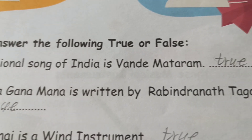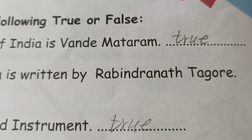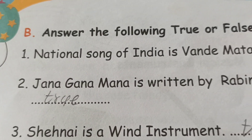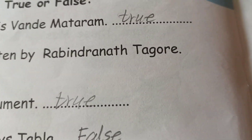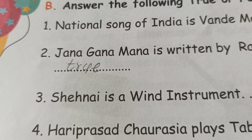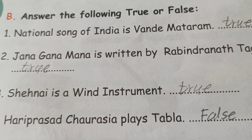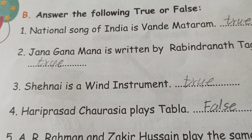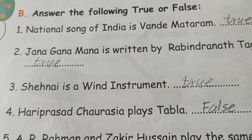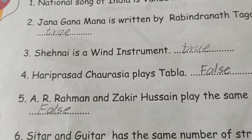National song of India is Vande Mataram — it's true. Jana Gana Mana is written by Rabindranath Tagore — it's true. Shehanai is a wind instrument — it's true. Hari Prasad Chaurasia plays Tabla — it's false.